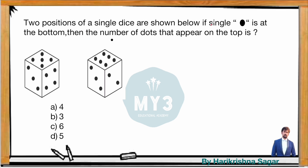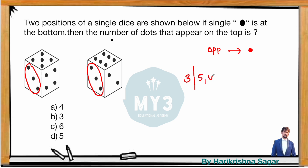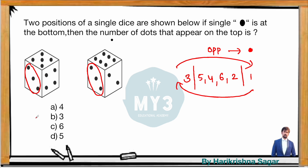Now let's look at important questions on dice problems. Two positions of a single dice are shown: if a dot is at the bottom, what number of dots appears on the top? That means we need to find what is opposite to the single dot face. We can see one face as common — three. Using Rule 1: adjacent to three from dice one is five and four; from dice two, six and two. What is not there? One. So three opposite is one, but they are asking what is opposite to one — mark the answer as three.